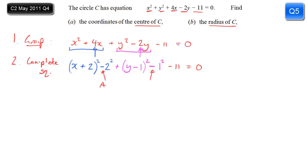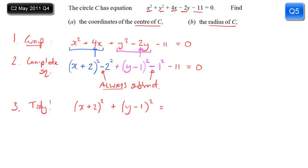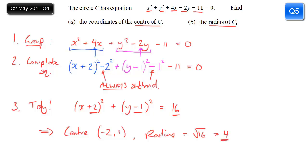We want x plus something squared and y plus something squared on the left, with all the numbers shifted to the right. So we add 11, 1, and 4 (from 2 squared) to the right, and we get 16. That gives us all the details of our circle. We can read off the centre coordinates: from 2 and minus 1, we reverse the signs, so the centre is (minus 2, 1). The number on the right-hand side is the radius squared — square root 16 gives a radius of 4.